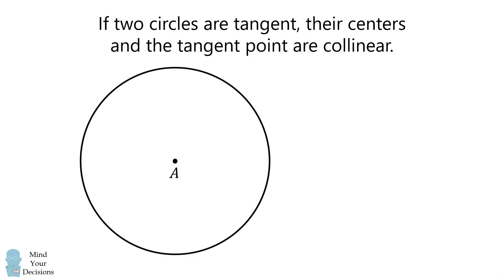We begin with a preliminary result. If two circles are tangent, their centers and the tangent point are collinear. To see why, draw a tangent line through point C. By definition, AC will meet this at a right angle, and also BC will meet this tangent line at a right angle.